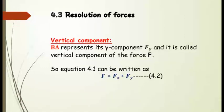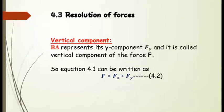Using equation 4.1, we put the values of components fx and fy. Equation 1 is: OA = OB + BA. Here OA is force F, OB is fx (horizontal component), and BA is fy (vertical component). So we derive the equation: F = fx + fy, by putting the components of force.